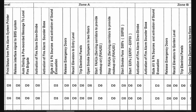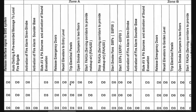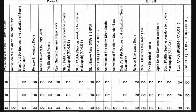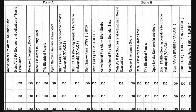Then, mute audio, visual, and public sources and activate the evacuation sound after 90 seconds. Release emergency doors and access controls immediately. Recall elevators to the entry level — the escape floor — immediately. Trip electrical panels immediately.